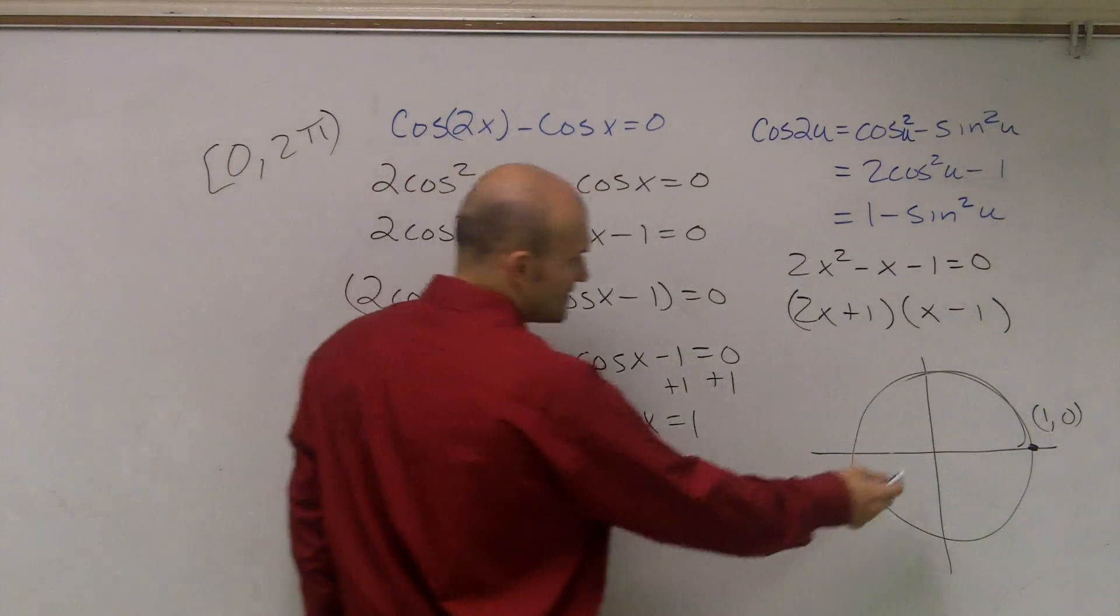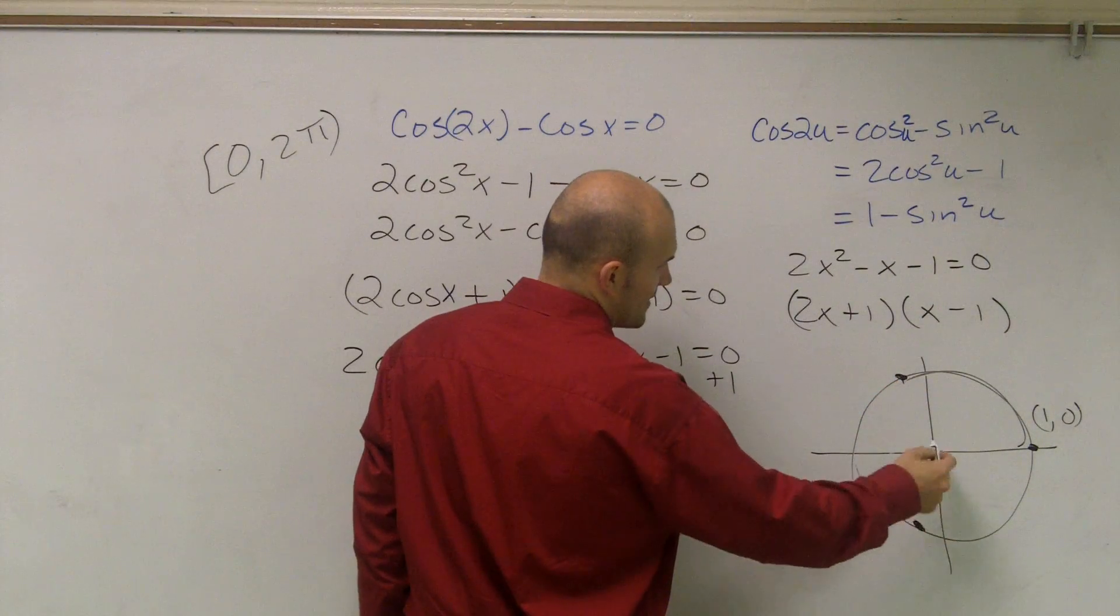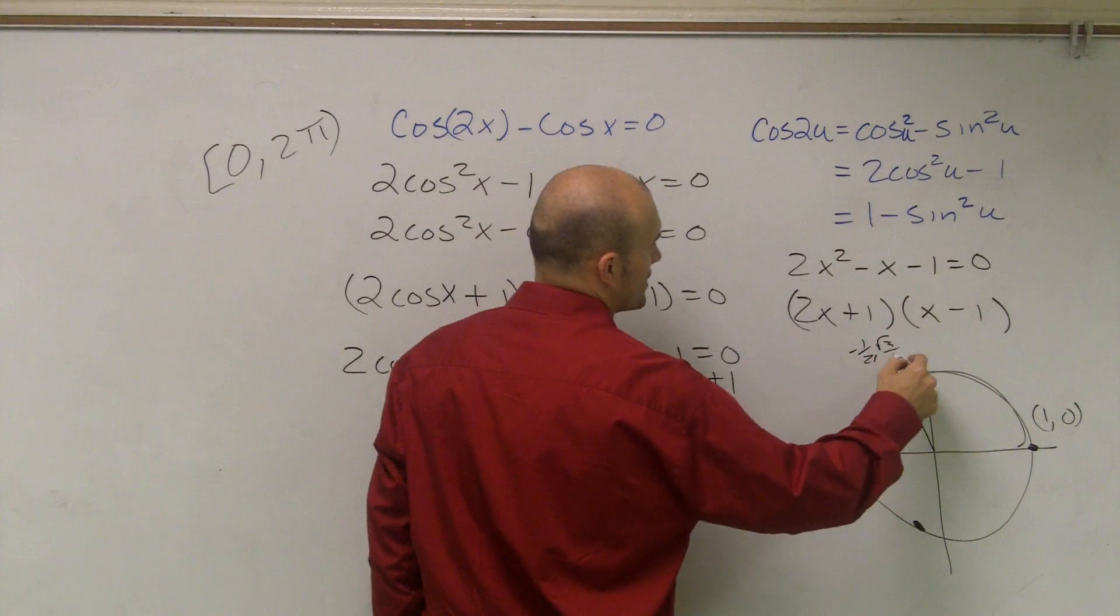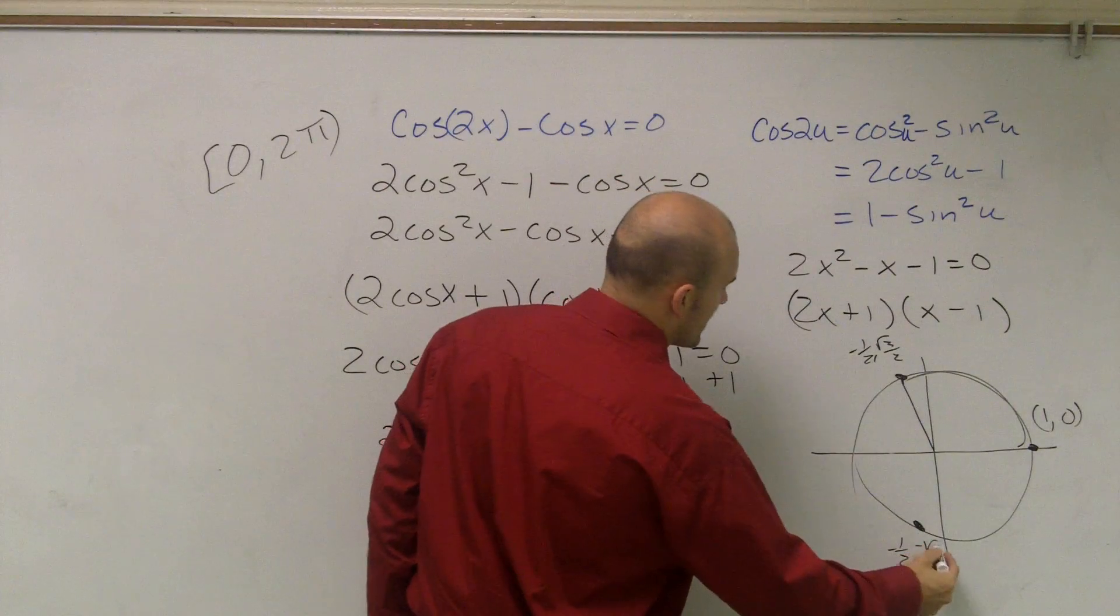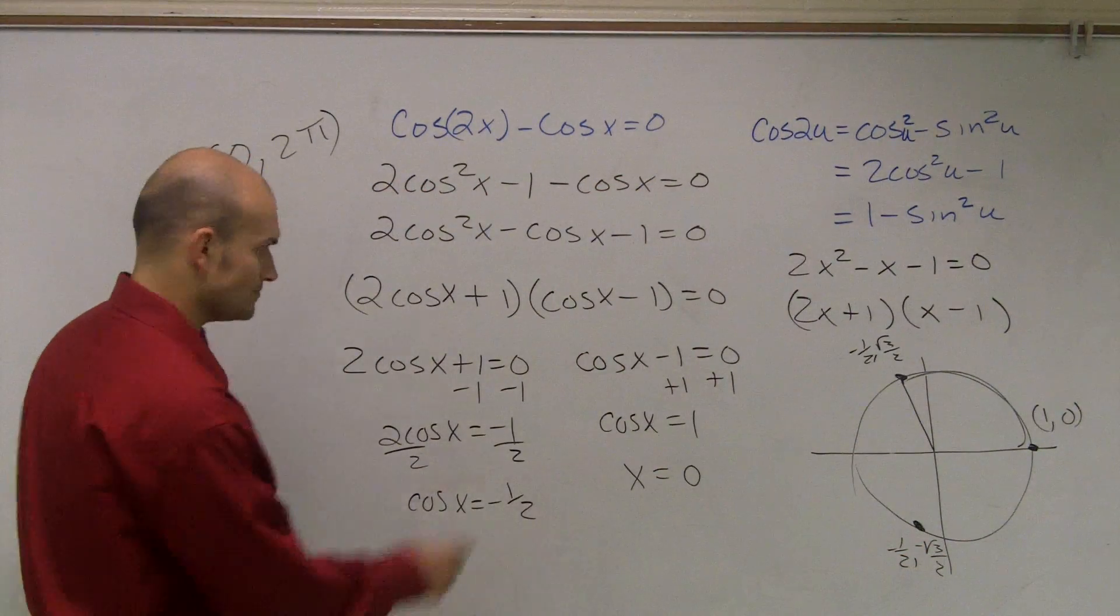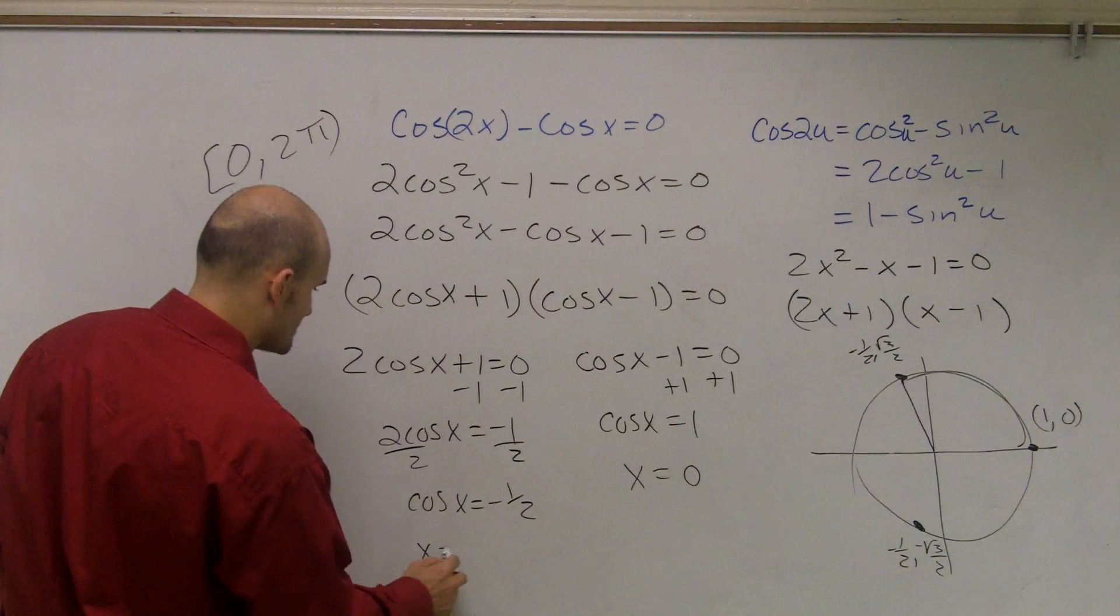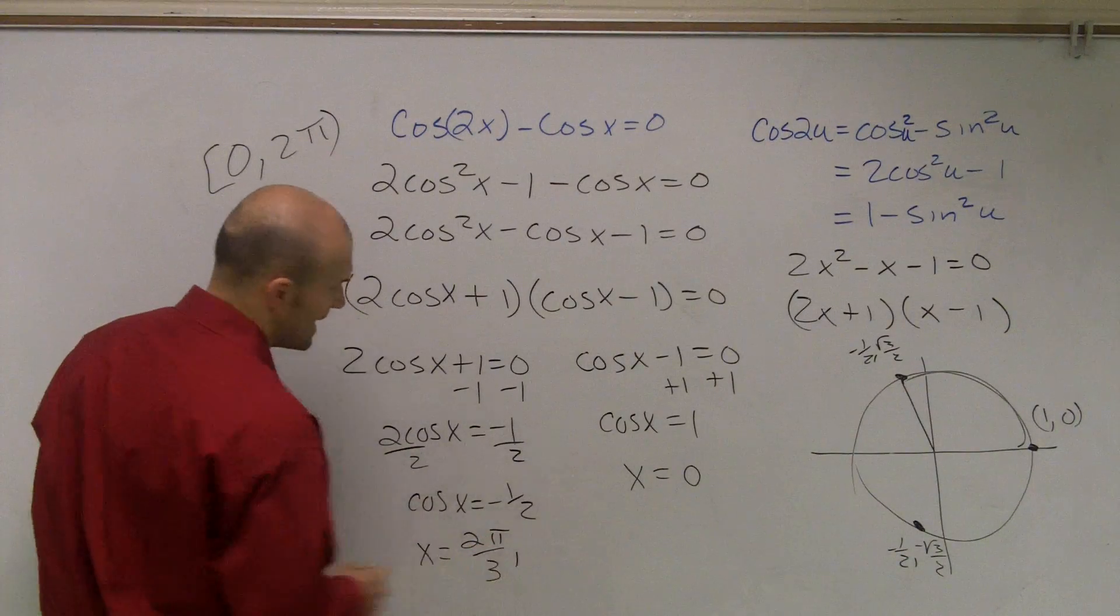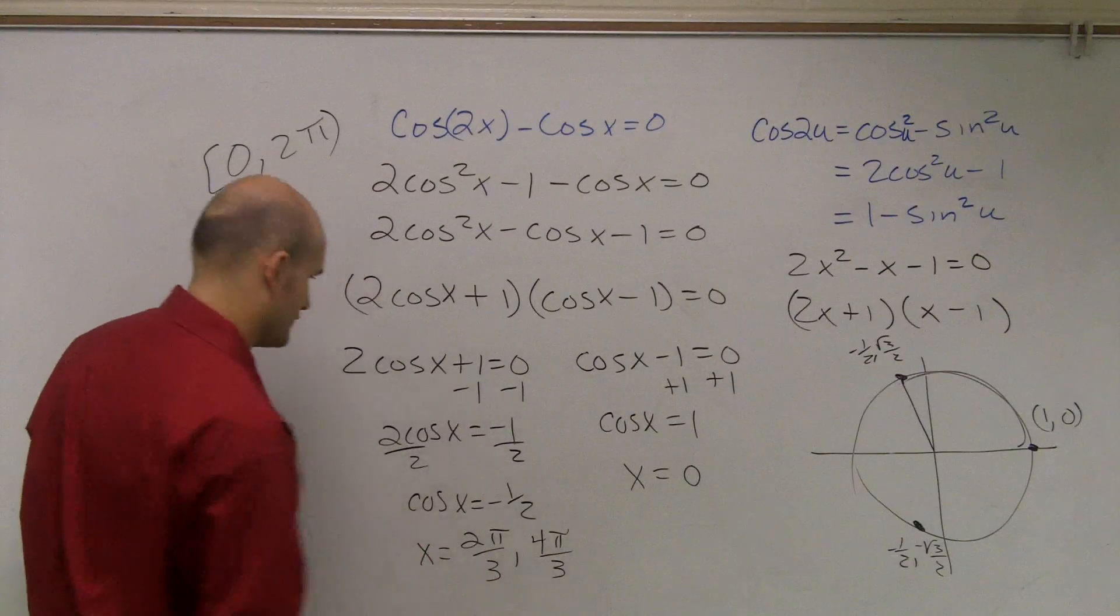Now over here, we have a negative 1 half. Well, negative 1 half is going to be that angle down there and that angle right there. And I can write that as negative 1 half, radical 3 over 2, and this one is negative 1 half. I'm sorry, that's positive, yeah. Negative radical 3 over 2. So those two angles where I have those points are going to be x is going to be equal, let's see, 2 pi over 3 and 4 pi over 3.